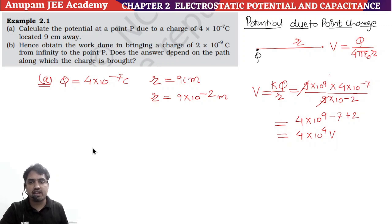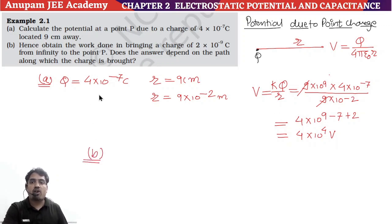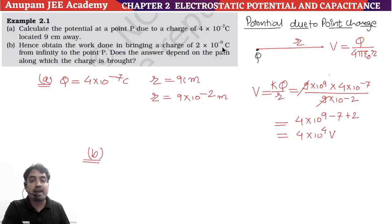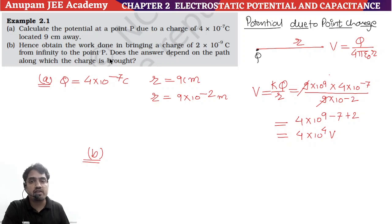Now we are going to see Part B, which is related to work done. The question is: obtain the work done to bring a charge of 2×10⁻⁷ coulomb from infinity to point P.